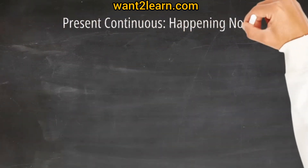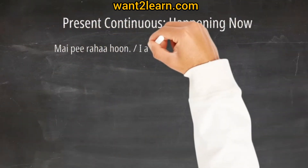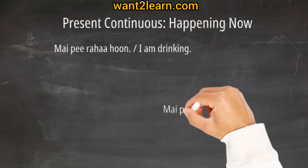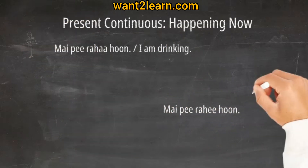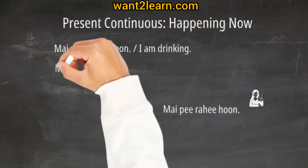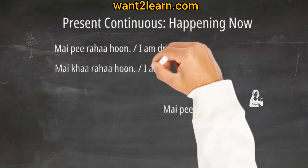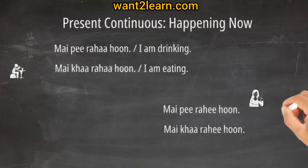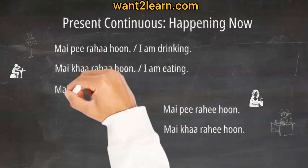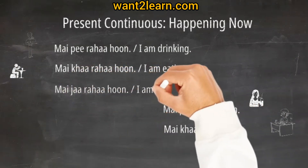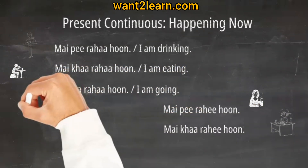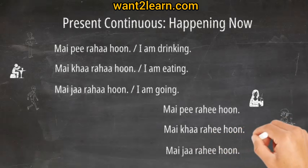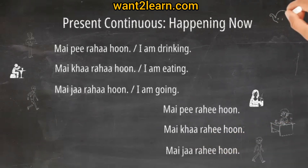Present continuous — happening now. I am drinking: Mein piti rahi hun. I am eating: Mein khaa rahi hun. I am going: Mein jaua rahi hun.